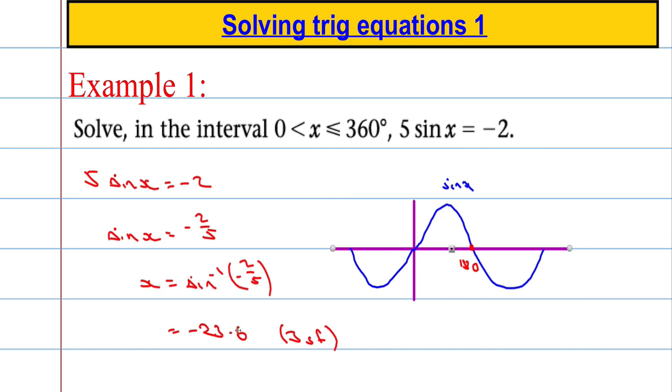Where would negative 23.6 degrees be? If this is 0 degrees, I would have to go back 23.6 degrees. But the interval we're interested in is between 0 and 360. So I now have to consider where will I get the same solution. This is where the symmetry of the graph is very useful. If it was 23.6 degrees back in this direction, it's actually going to be the same as going 23.6 degrees in this direction, which would give me the same value.